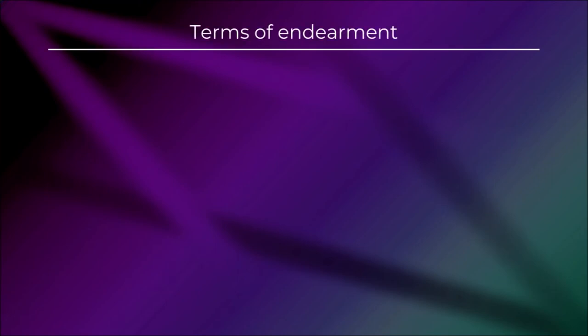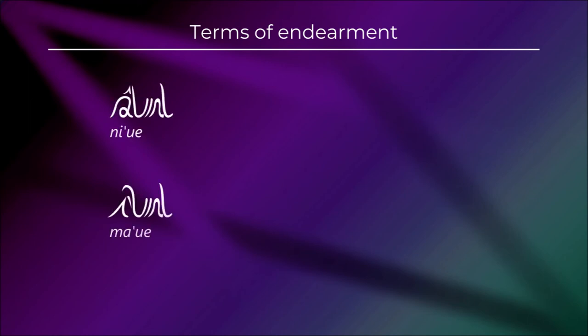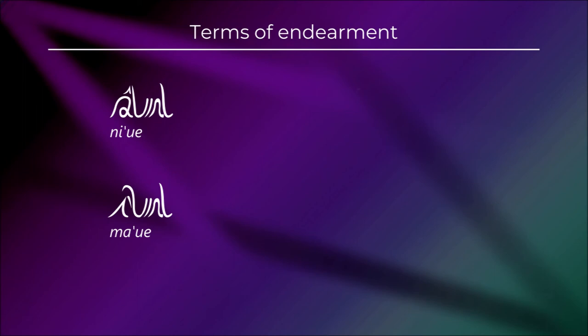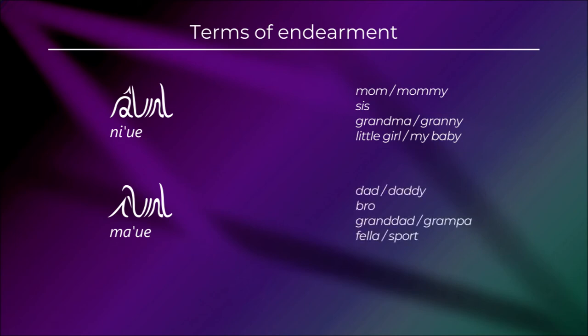A final thing about this topic — it'll be quick — is terms of endearment. In Eilis, it's common to affectionately address any relative as either ni-ue if they're female, or ma-ue if they're male. So ni-ue could mean mom, mommy, sis, grandma, or a mother addressing her daughter as 'my baby girl.' Analogously, ma-ue could mean dad, daddy, bro, grandpa, or a parent talking to their son — 'little fella,' 'sport,' something like that.